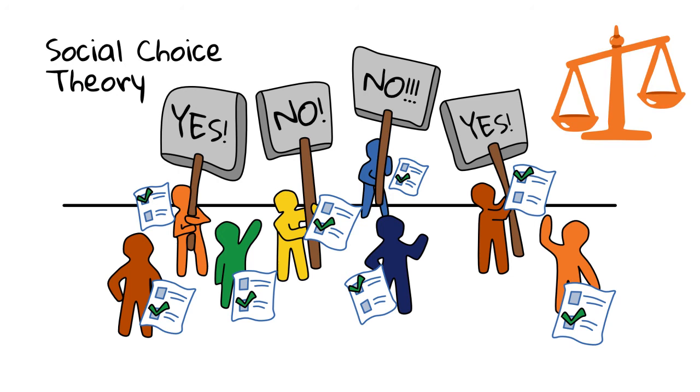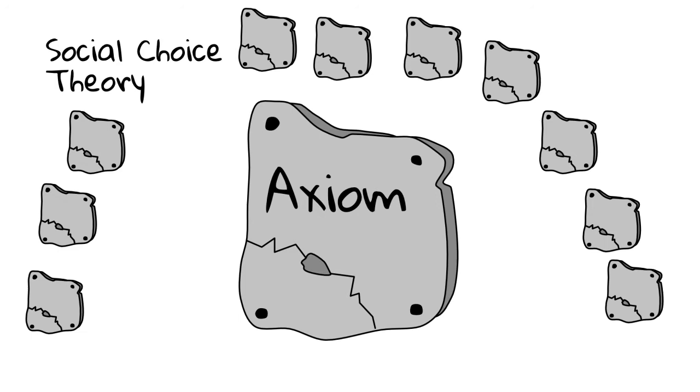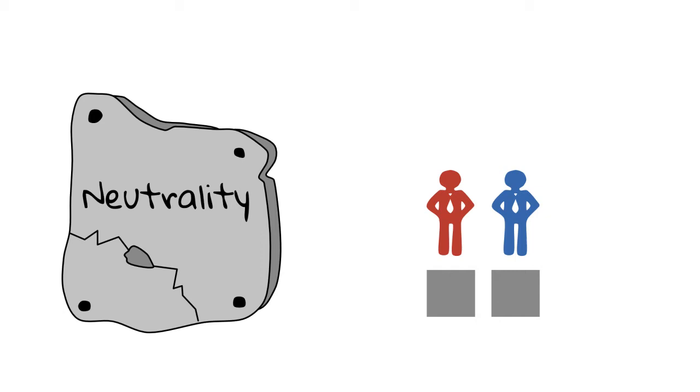Social choice theory uses so-called voting axioms to describe what we consider as fair. For example, the axiom of neutrality says that all candidates should always be treated equally.